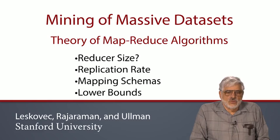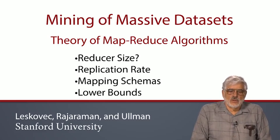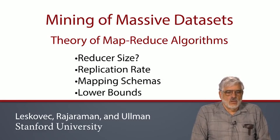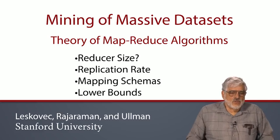There are several ingredients to the theory. First, we need the notion of reducer size, the maximum amount of data that a reducer can have as input. We also need the notion of replication rate, the average number of key-value pairs generated by a mapper on one input. One goal is to prove lower bounds on the replication rate as a function of reducer size. That is, the smaller the reducer size, the bigger the replication rate.